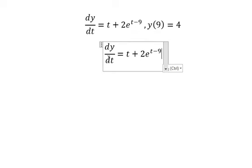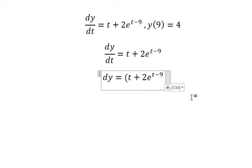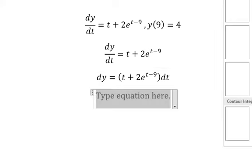First, we multiply both sides with dt and you got about dy equals to this one dt. Next, we need to put the integration for both sides.